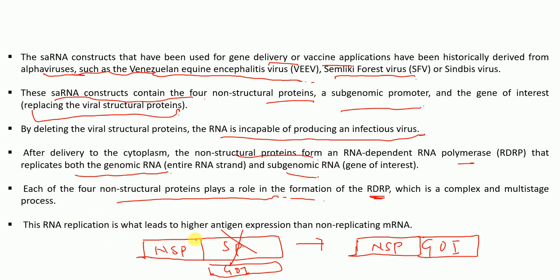The non-structural proteins form an RNA polymerase replicase that replicates both genomic RNA and subgenomic RNA — our gene of interest. Each of the four non-structural proteins plays an important role in forming the replication machinery in a complex, multi-stage process. This replication leads to higher expression than non-replicating mRNA. The major advantage is that with self-replicating RNA, with a low initial dose, we produce higher amounts of protein. I hope this video was helpful — please like, share, and subscribe. Thank you very much.